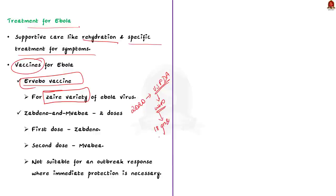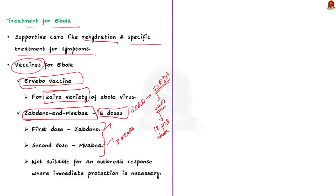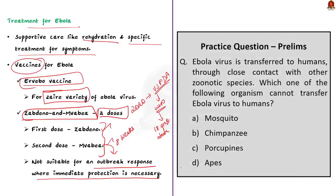There has been another vaccine — Zabdeno and Mvabea — for the prevention of Ebola virus disease. The vaccine is delivered in two doses: Zabdeno is administered first, and then Mvabea is given approximately eight weeks later as a second dose. Note that this two-dose regimen is therefore not suitable for an outbreak response when immediate protection is necessary. Through this discussion, we learnt about the Ebola virus, how it is spread, the transmission route, symptoms, and the vaccines for prevention of Ebola infection.